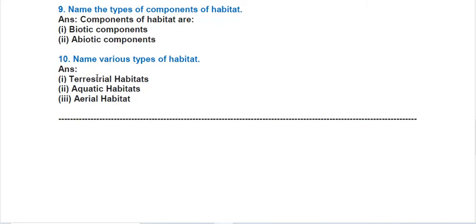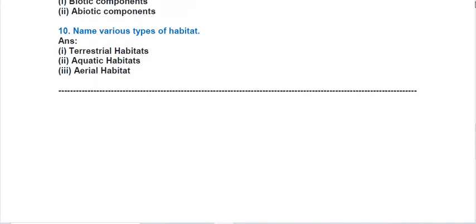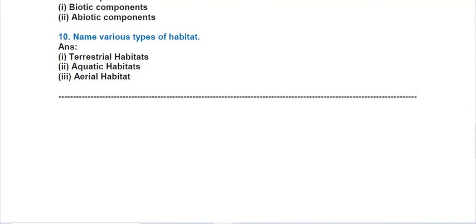The next question: name the various types of habitats. There are three types of habitats: terrestrial habitat, aquatic habitat, and aerial habitat. Terrestrial means land habitat, aquatic means water habitat, and aerial means air habitat. With this we have finished all the question answers of this chapter.